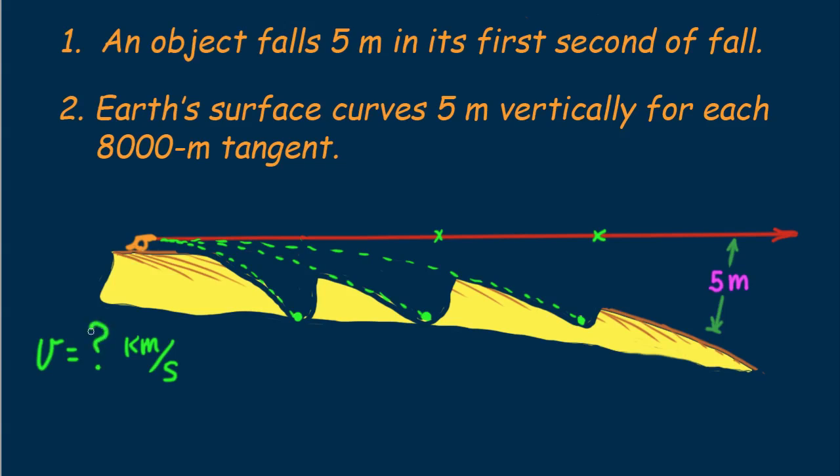Can you see that if it gets 8 kilometers downrange in one second, and falls 5 meters below where it would go with no gravity, that no trench would be necessary? What's the speed? I hope you said 8 kilometers per second.